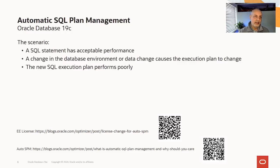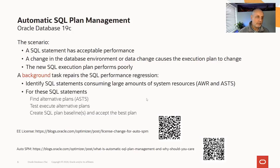The scenario auto SPM is designed to address is that you have a SQL statement that's had acceptable performance over a period of time, but some change in the database environment — stats or something like that — has caused a plan change, and now you have a new execution plan that performs poorly. A background task wakes up periodically, looks for performance regressions, and specifically looks for SQL statements that are consuming a large amount of resource.